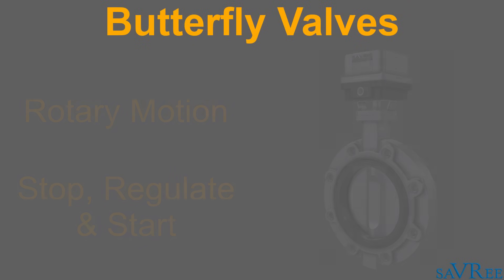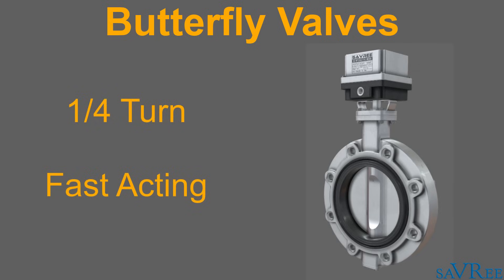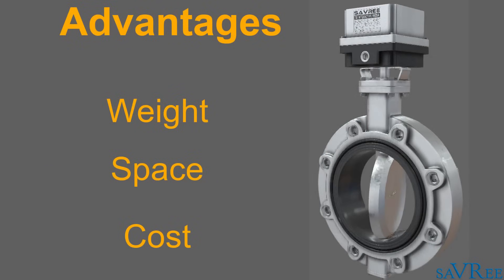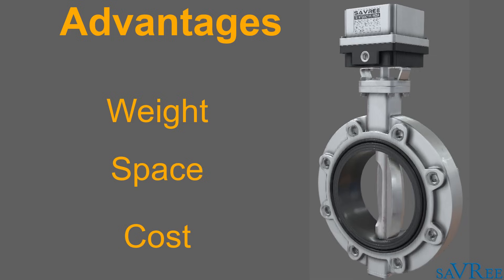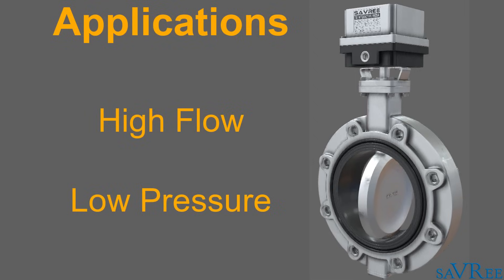A butterfly valve is a rotary motion valve that is used to stop, regulate and start flow. Like all quarter turn valves, the butterfly valve is fast acting. Larger butterfly valves employ planetary type gearboxes. Butterfly valves possess many advantages over gate, globe, plug and ball type valves, especially for larger applications. Savings in weight, space and cost are the most obvious advantages. The pressure drop across the butterfly valve when fully open is low. Butterfly valves are very well suited for handling large flows of liquids or gases at relatively low pressures.